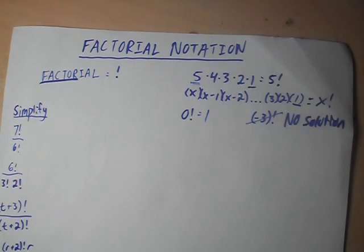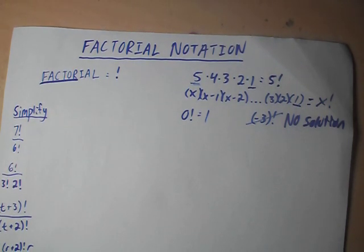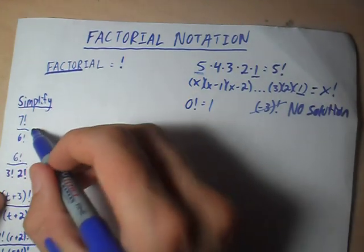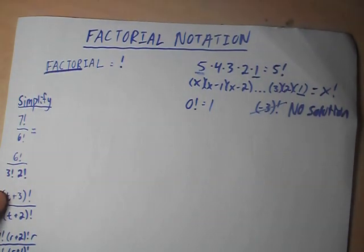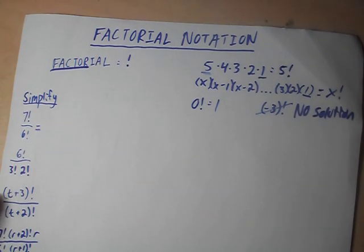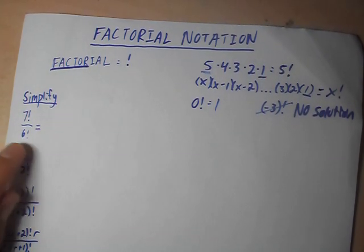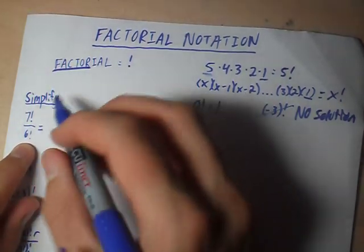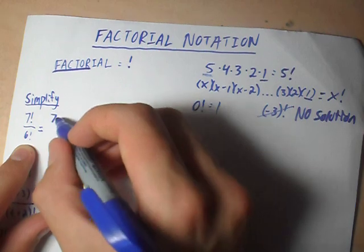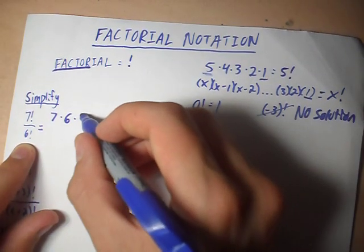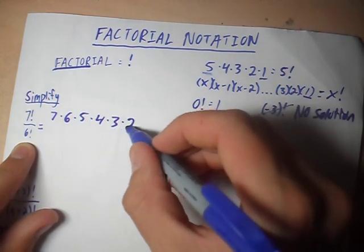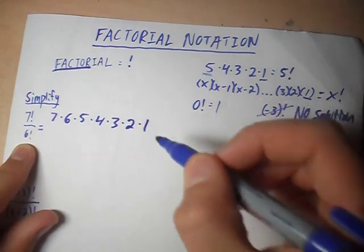When dealing with factorials, we're going to have to work with specific types of questions, often asked to solve and simplify. With this first one, we've got 7 factorial over 6 factorial. What we can do here is expand it. Remember, you decrease by one each time. So the numerator is going to be 7 times 6 times 5 times 4 times 3 times 2 times 1.